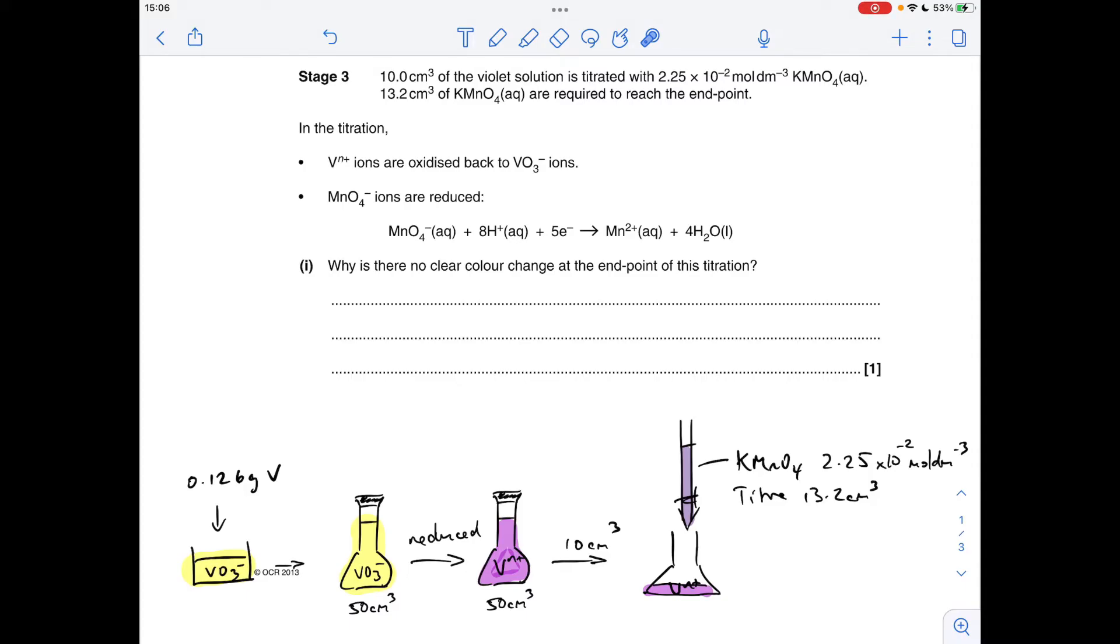Why is there no clear colour change at the end point of this titration? Because you're titrating KMnO₄, which is purple in colour, against Vⁿ⁺, which is violet in colour. So the colours are too similar.